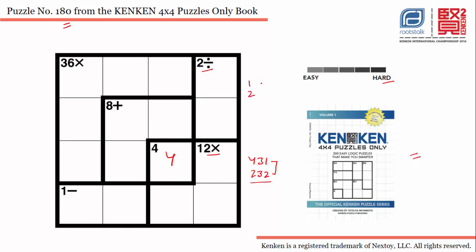Now let's talk about this cage — it says two division, so we have two possible combinations: 1÷2 or 2÷4. If you observe closely, whatever option we choose, either this one or this one, 2 is definitely there in these two cells.